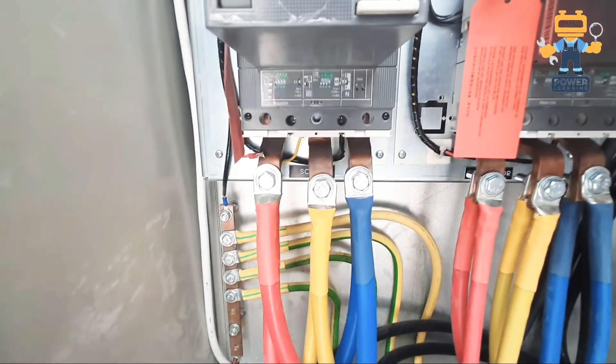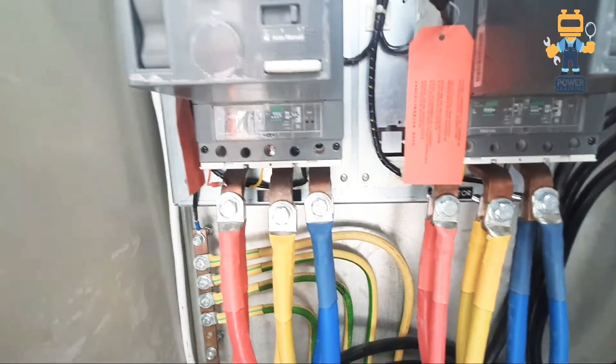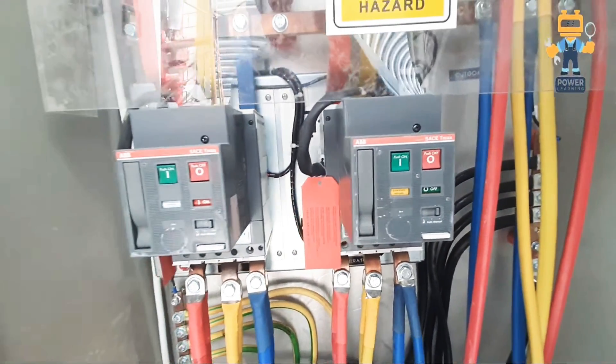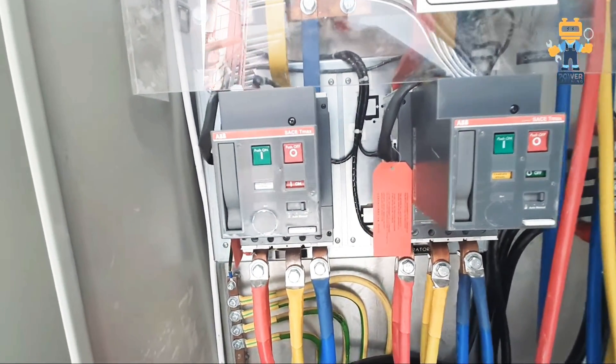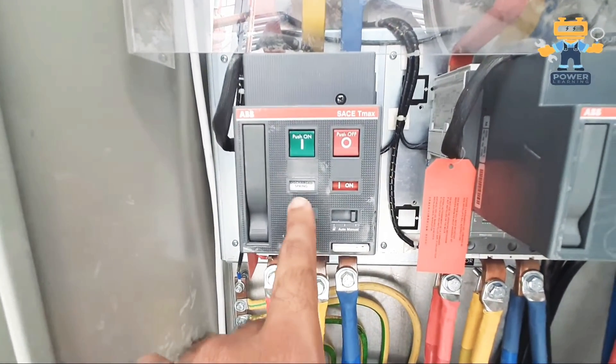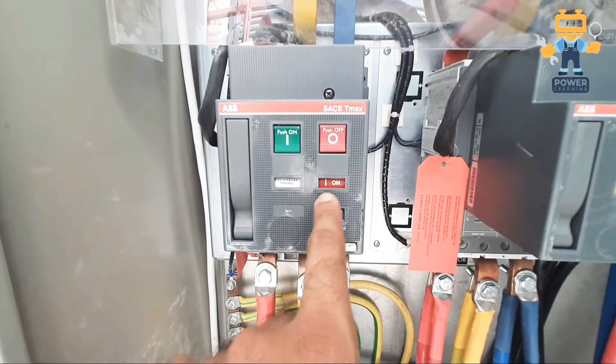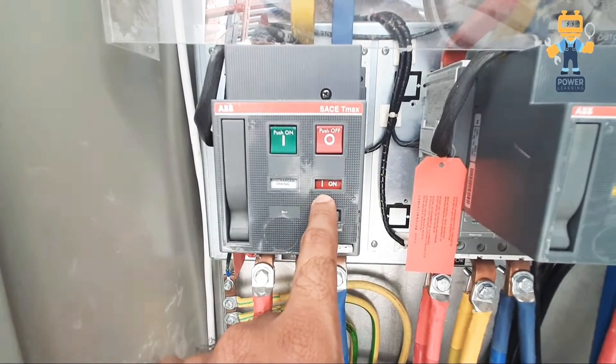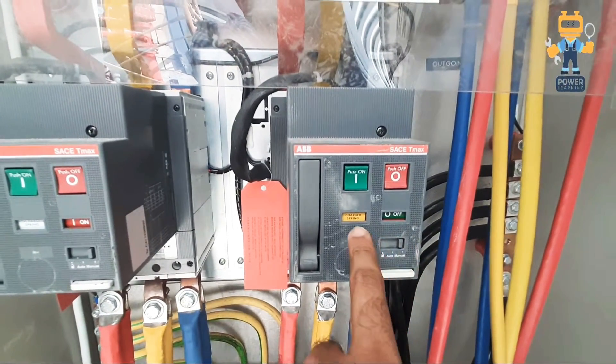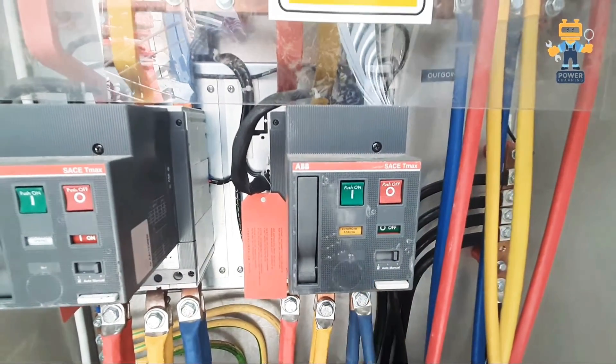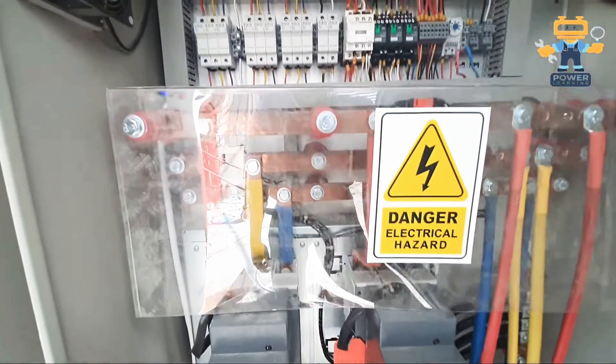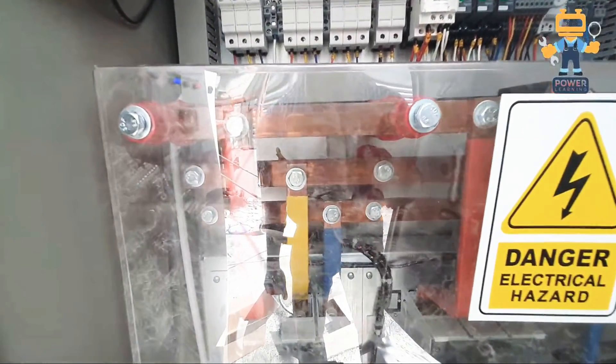As you see, this is our two MCCBs and also on the MCCB we install this motor mechanism. This motor mechanism will make the breaker automatically on and off. As you see on this motor mechanism we have option of manually on and off and automatically on and off. Now these are on manual mode and here we have two buttons for on and off manually.